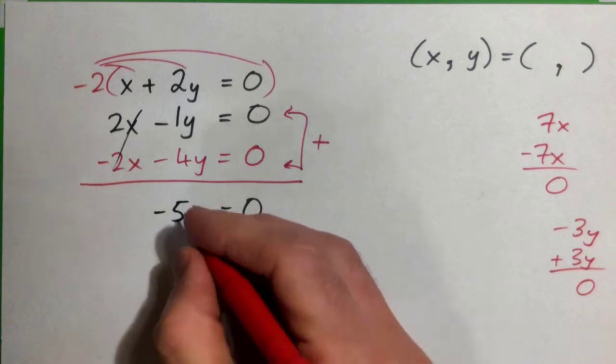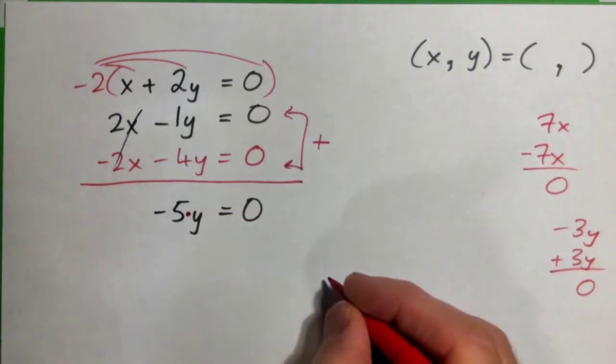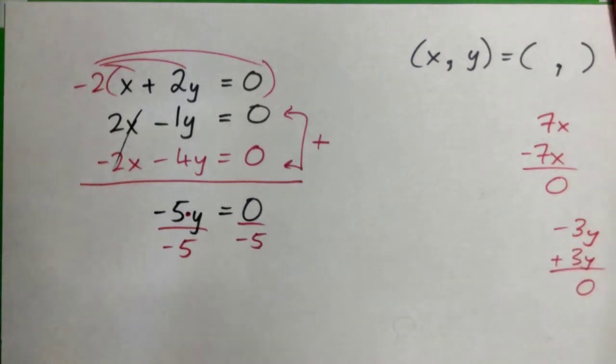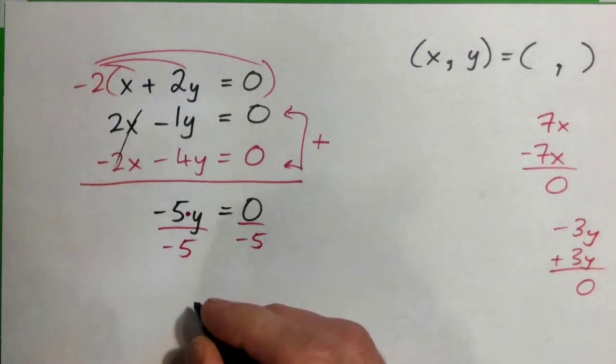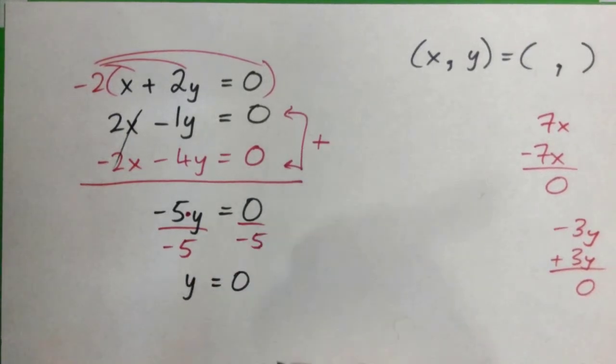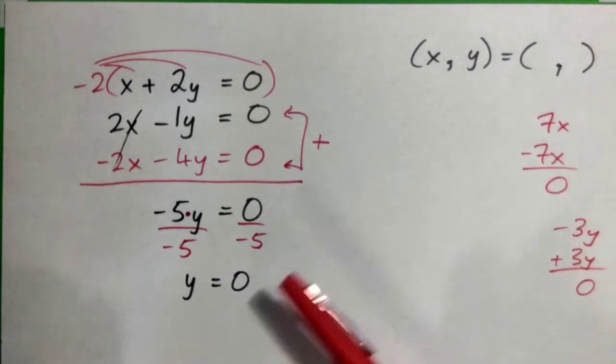So it's negative 5 times y equals 0, so we divide by negative 5 on both sides to get y equals 0. Good, so we've actually got one of the answers.